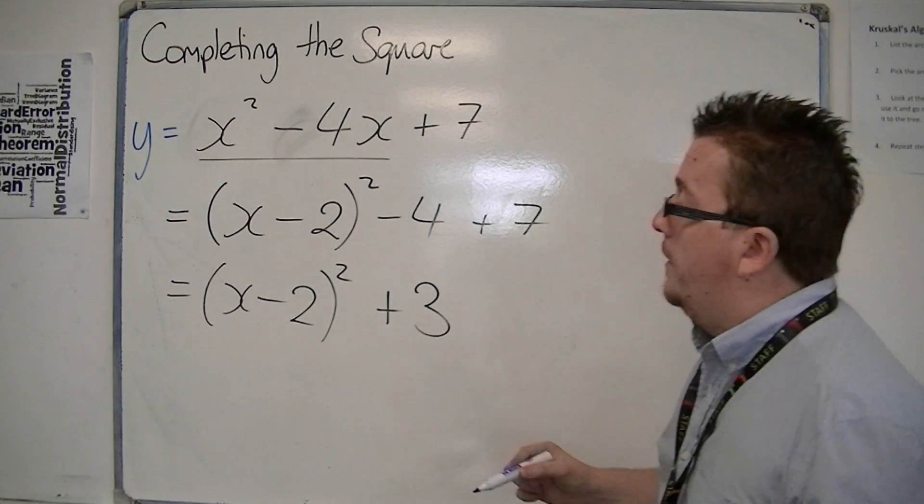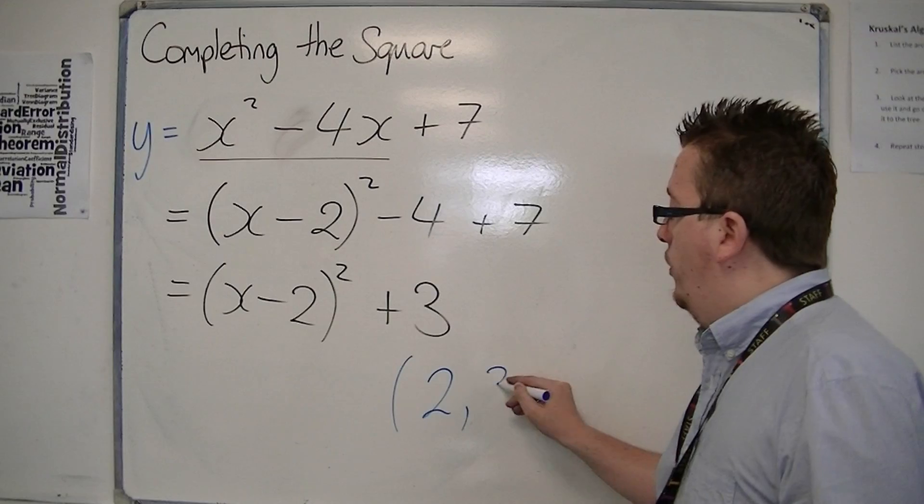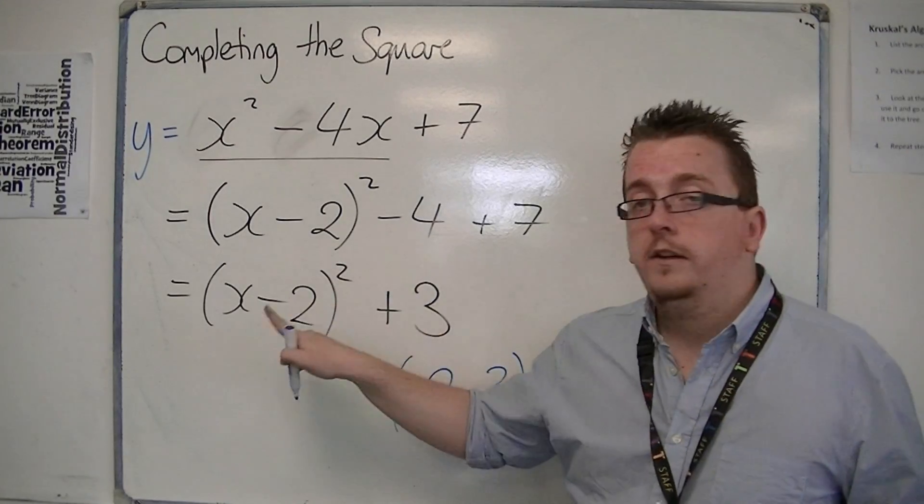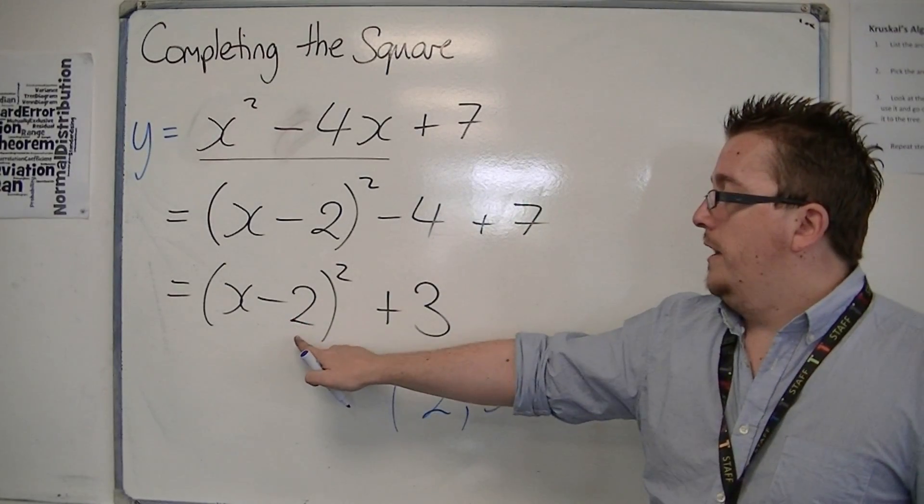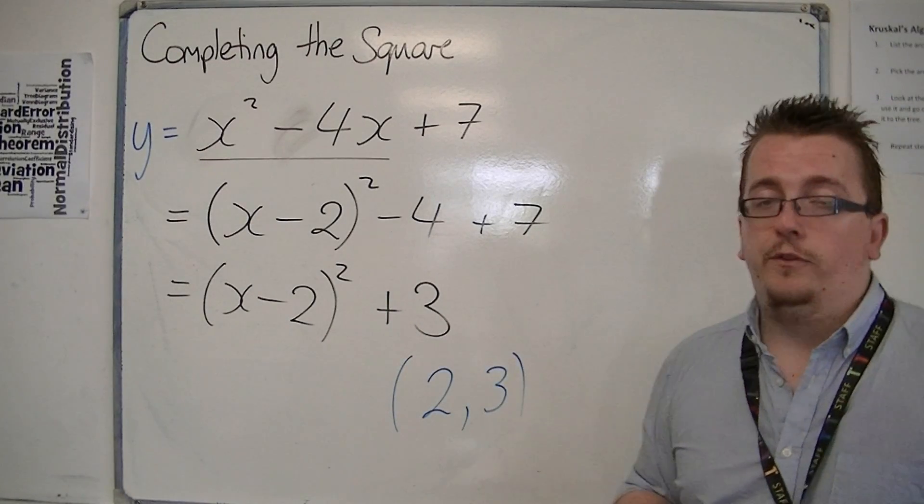and I can now say the vertex is located at (2, 3). Because remember, you change the sign of the number that's inside the bracket and leave the sign of what's outside.